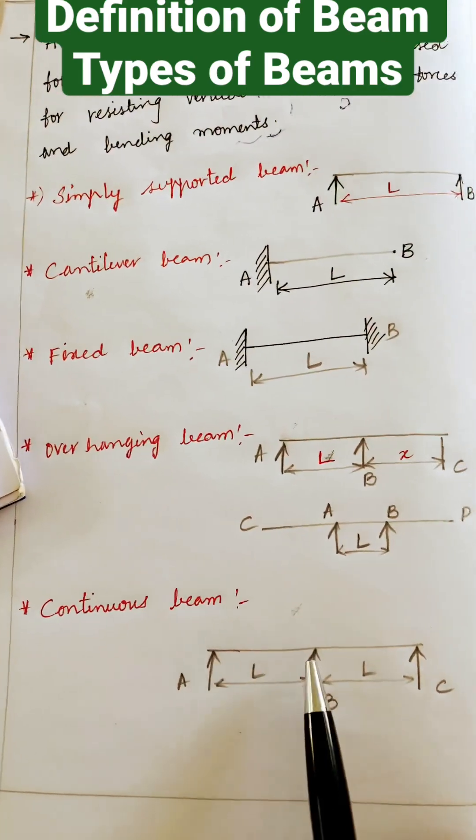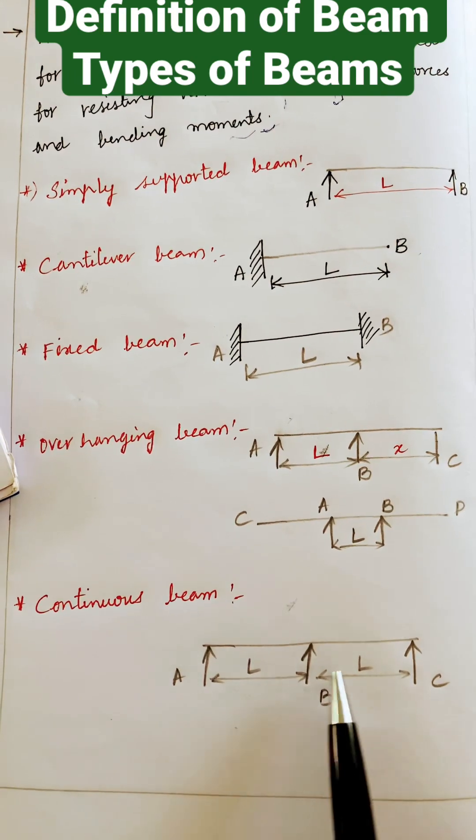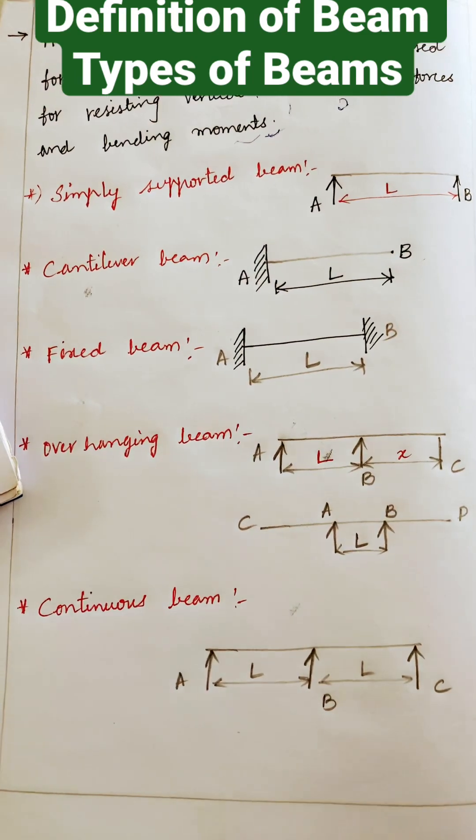Later the continuous beam. It has more than, if it has more than two supports, it is said to be a continuous beam.